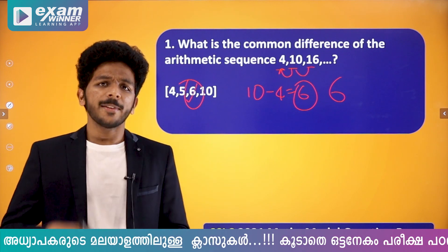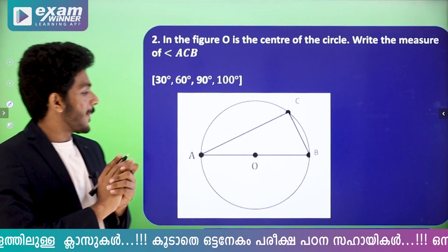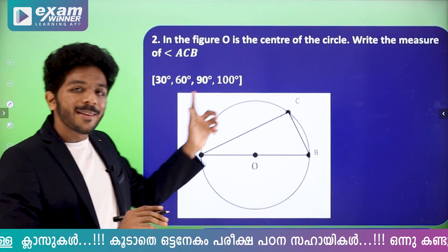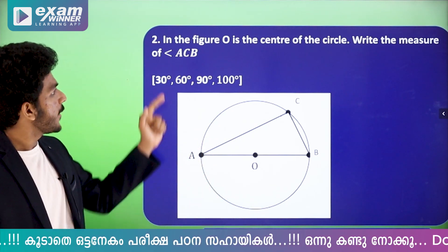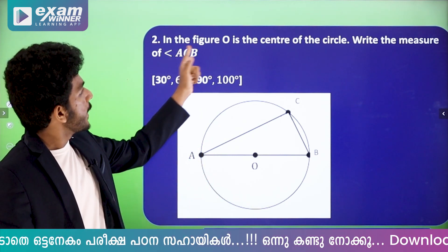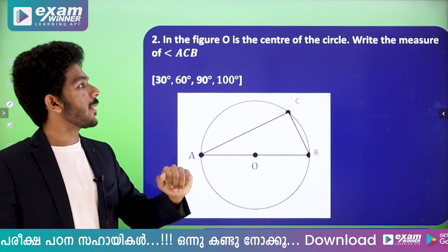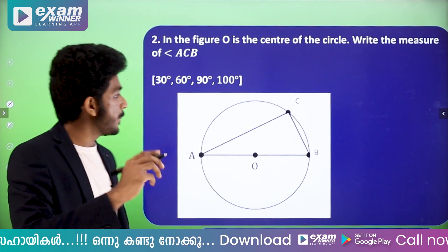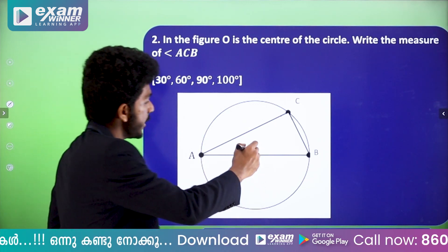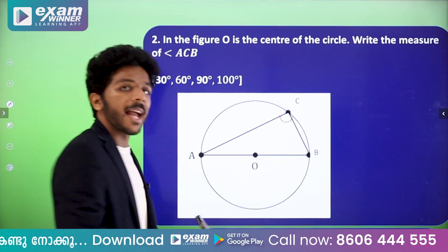Now we have the second question about a circle. In this figure, O is the center of the circle. We need to find the measure of angle ACB.